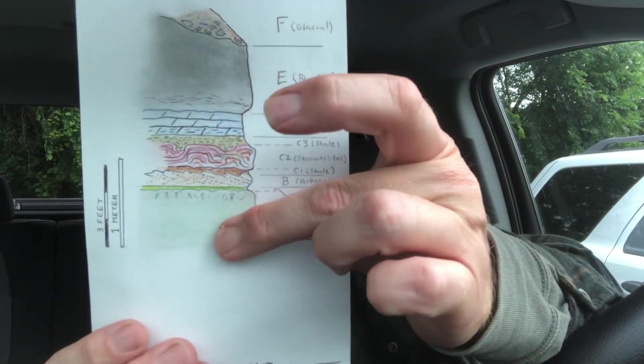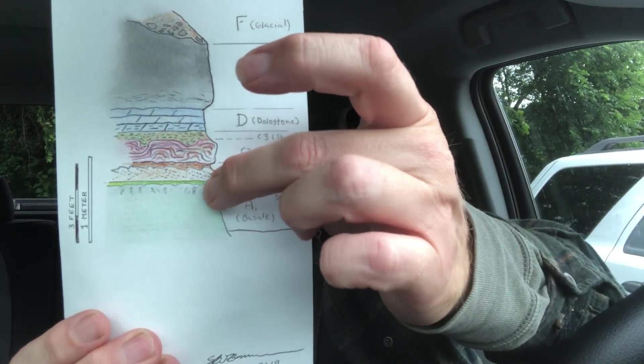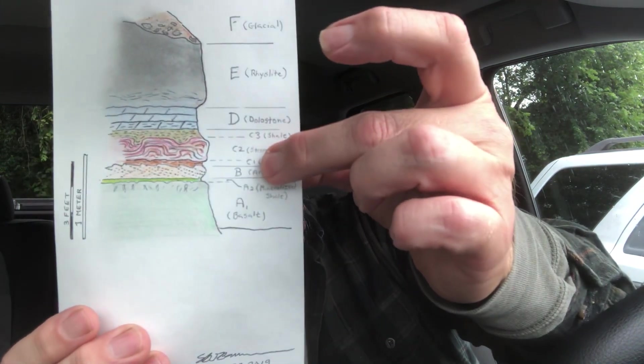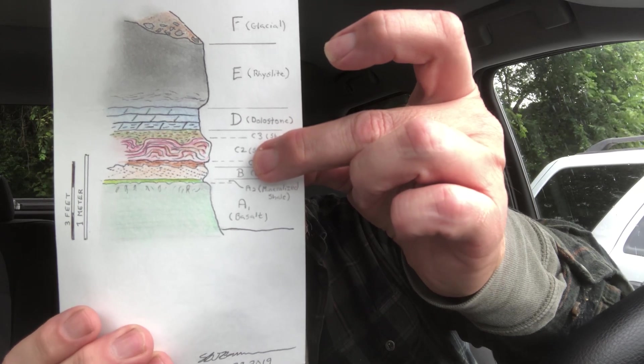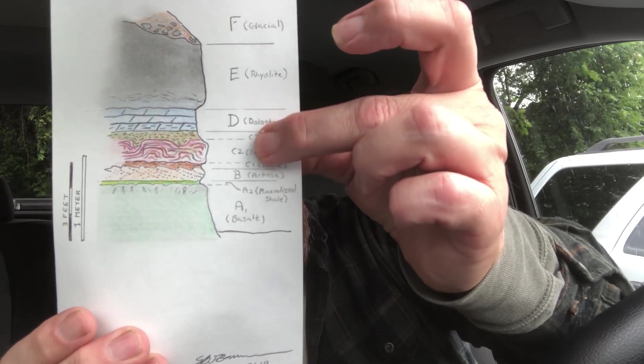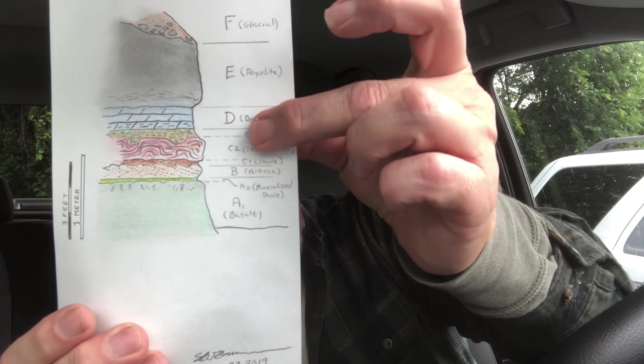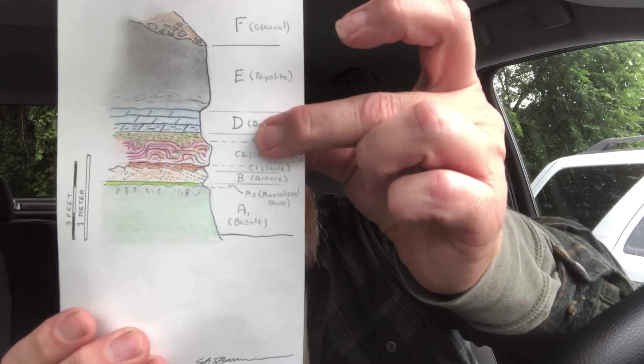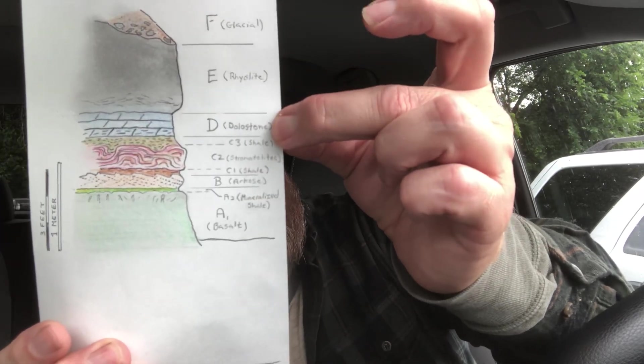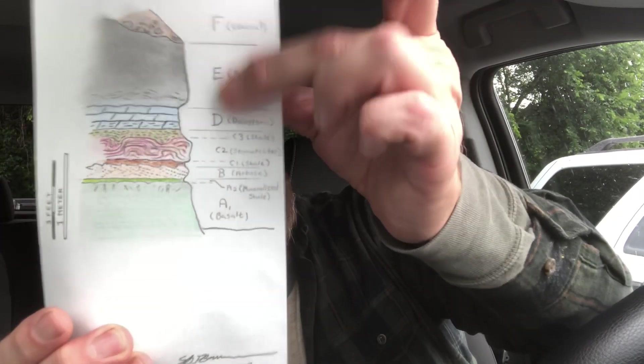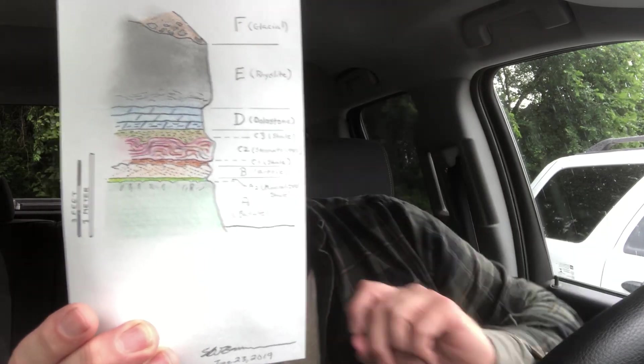So you have to decide what to date. You're going to redate this and you pull some zircons from A2 as well. You pull some from B. You don't bother with C1 because it's a shale, probably not going to yield any, or C2 because it's stromatolites, it's carbonaceous, isn't going to yield any. C3 is also a fine grained rock, so you're not going to deal with it. D is also a carbonate, so you're not going to date that, but then you're going to date this. You're going to grab some for this too.